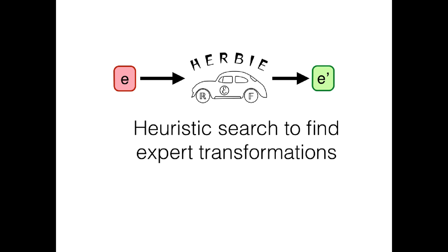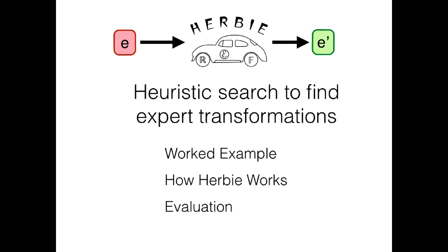And in this talk, I'm going to tell you how Herbie works. I'd like to start by just showing an example of how the accuracy of a floating point expression could be improved, how an expert would do it. Then I'll show you how Herbie parallels the same steps, but automatically. And finally, I'll relay some experiments and anecdotes about Herbie's actual function.